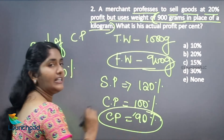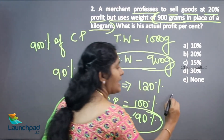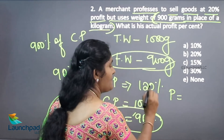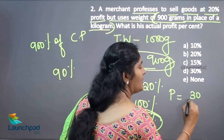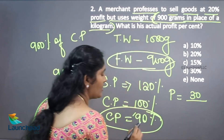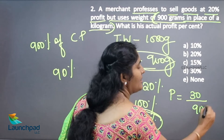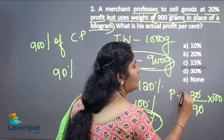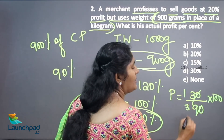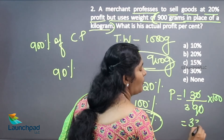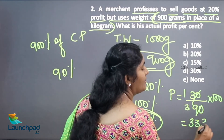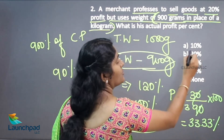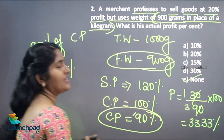The CP is 90%. So we calculate the profit percentage: SP minus CP is 120 minus 90 = 30, divided by CP which is 90, into 100. That gives 1 by 3, which equals 33.33% profit. The answer option is not available, so the answer is none of these.